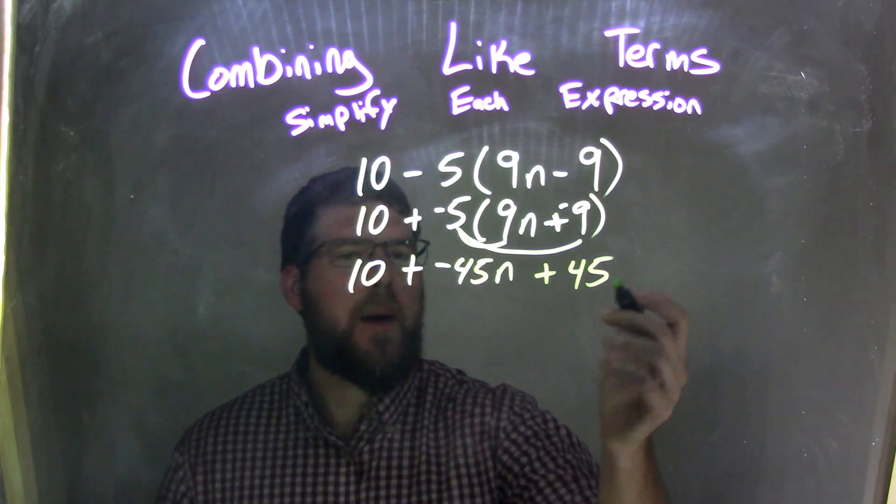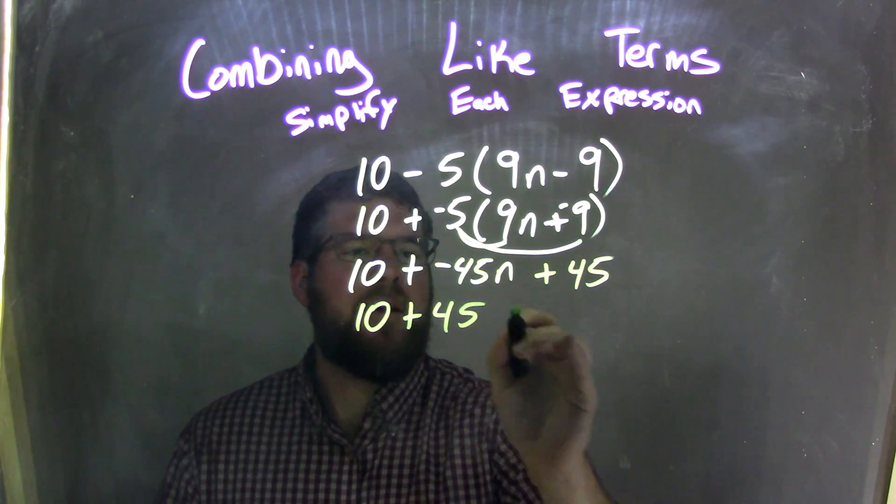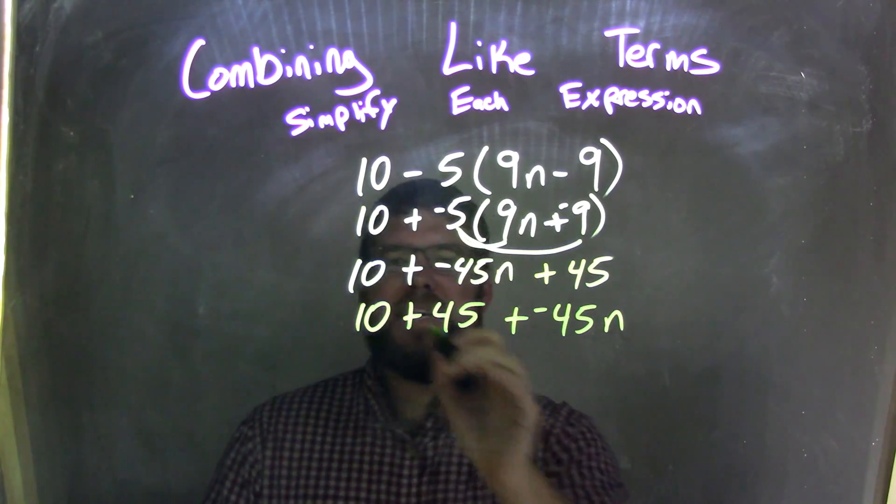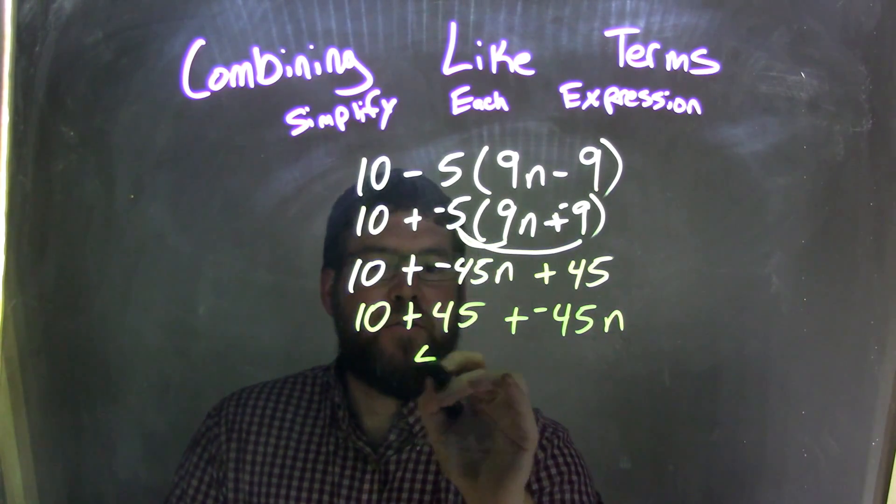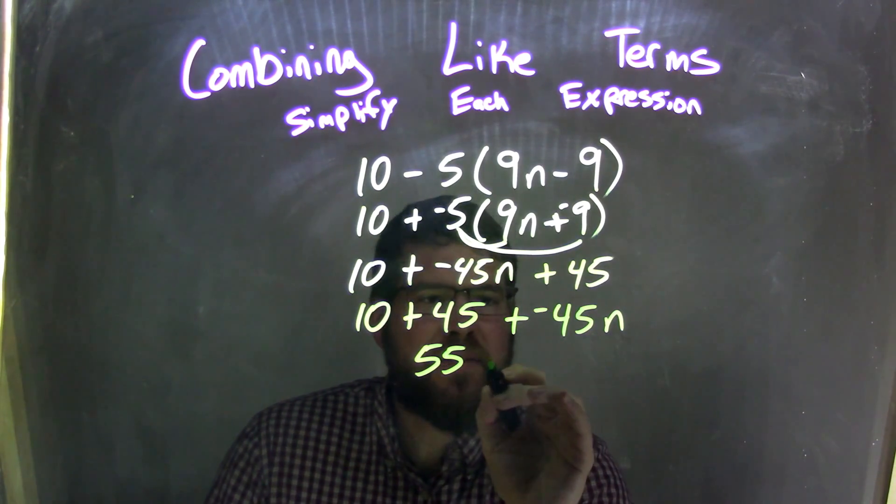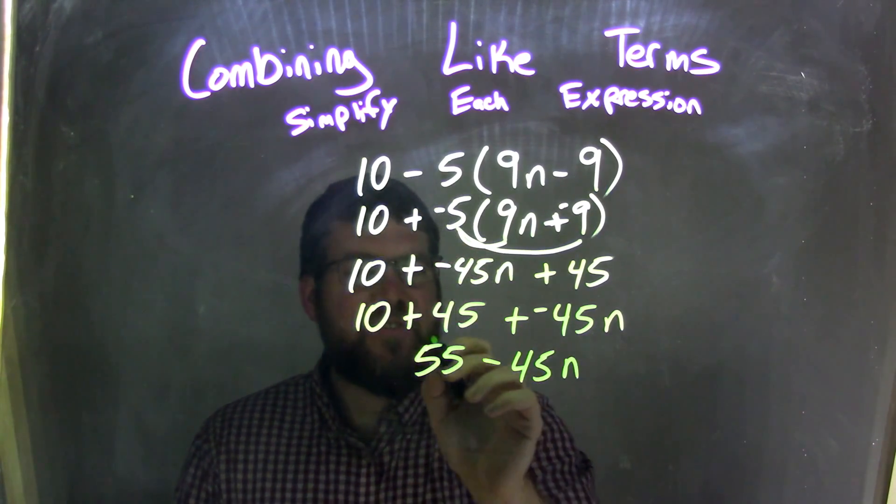So now let's use the commutative properties, rearrange them, 10 plus 45 plus a negative 45n. Well, 10 plus 45 is 55, and now I'm going to do two steps here. Adding a negative is the same thing as subtraction, so we have minus 45n, and that is our final answer.